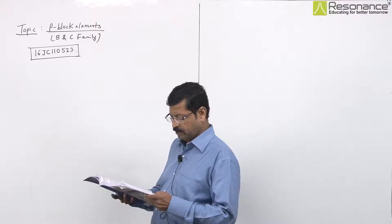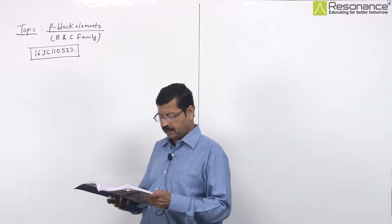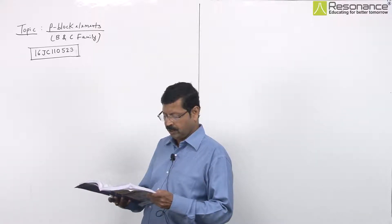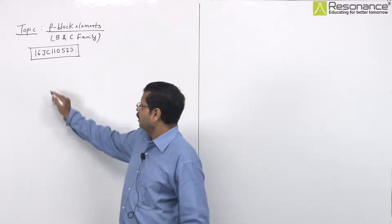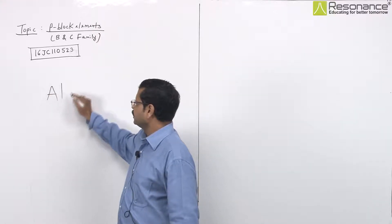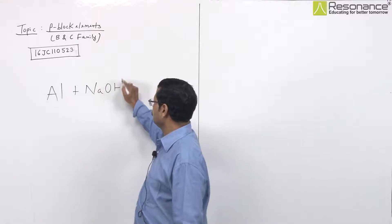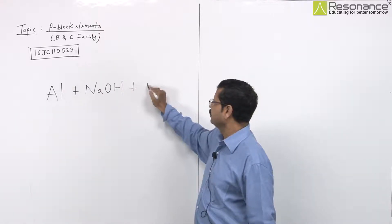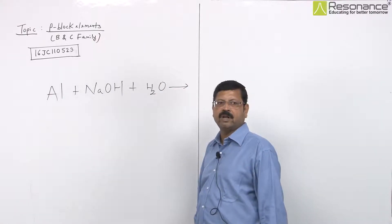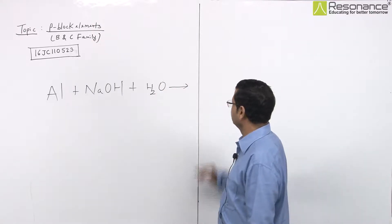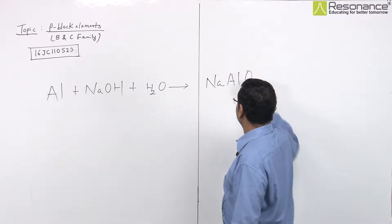In this question, you have to write the balanced equation for aluminum with aqueous sodium hydroxide. Aluminum has amphoteric character, so it acts as both an acid and a base. Hydrogen is evolved in this reaction.